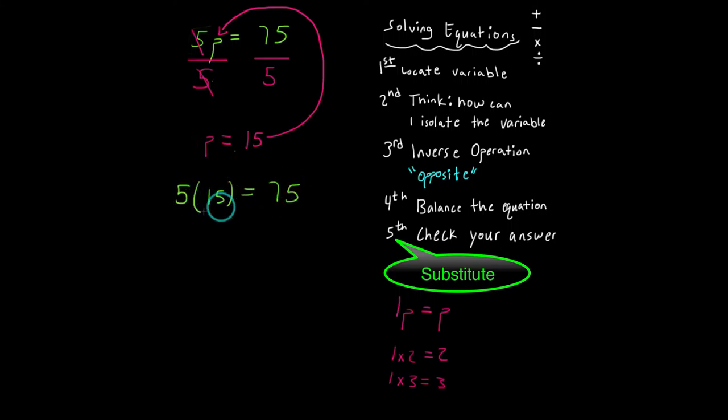And I've still got to check this answer. So five times 15, if you actually calculated that, you'd find out it is equal to 75. So 75 is equal to 75. And this checks out. So I'm going to put a check mark down.